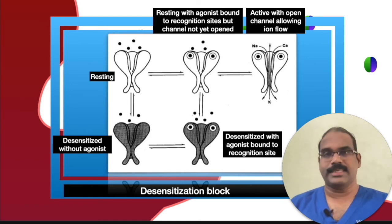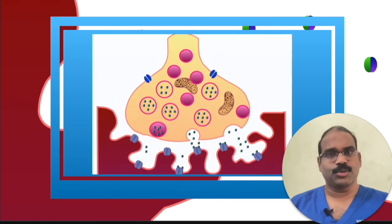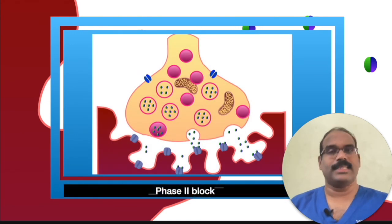Desensitization block may be a safety mechanism that prevents over-excitation of the neuromuscular junction. Phase two block differs from desensitization block.